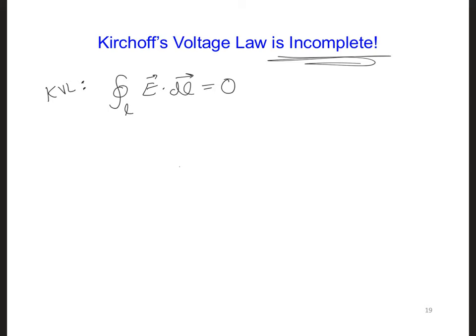Now we're finding out that when there are fields that are varying in time, in this case, we have the B field is changing in time. I'll just keep it general there, just dB/dt. Then this Kirchhoff's voltage law no longer holds.